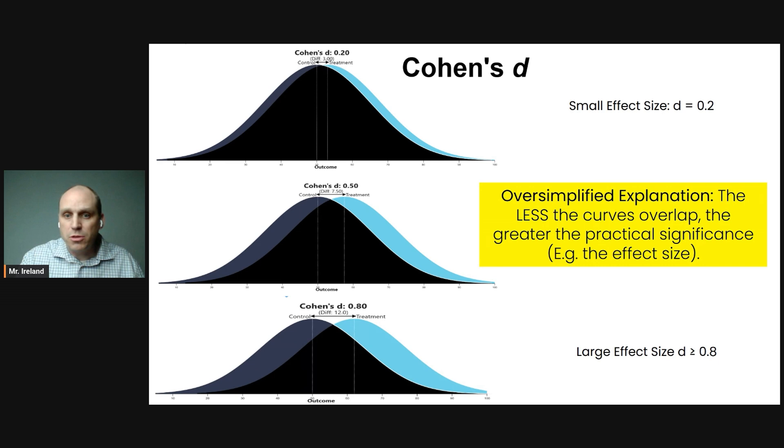which is a value that can range from zero to infinity. So the smaller the value, the smaller the effect size. The larger the value, the larger the effect size. Now, this won't be something you have to calculate. I assume College Board is going to give this information to you if it appears at all. But let me oversimplify what this means.